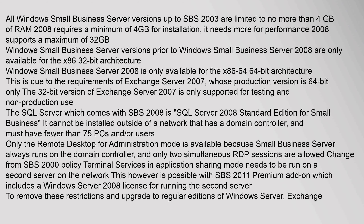All Windows Small Business Server versions up to SBS 2003 are limited to no more than 4 gigabytes of RAM. SBS 2008 requires a minimum of 4 gigabytes for installation and needs more for performance; 2008 supports a maximum of 32 gigabytes. Windows Small Business Server versions prior to 2008 are only available for the x86 32-bit architecture, while Windows Small Business Server 2008 is only available for the x86-64 64-bit architecture.